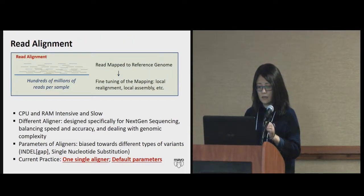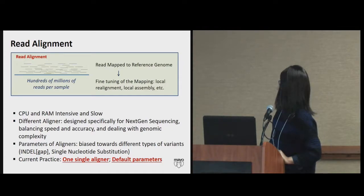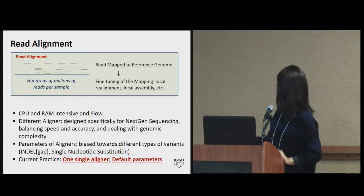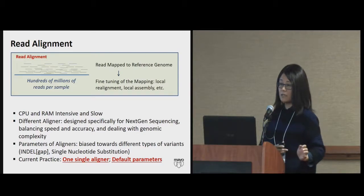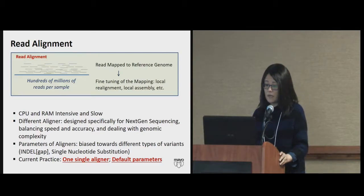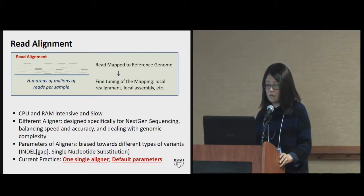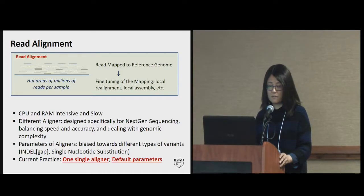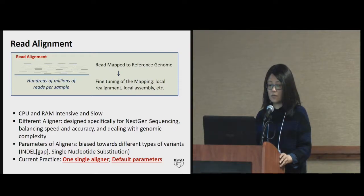Looking at more details of the algorithm used for read alignment: it's really CPU and RAM intensive and slow because of all the manipulation done locally block-by-block along the entire genome. There are many aligners and algorithms available, all specifically designed for next-gen sequencing problems where you have hundreds of millions of reads. You have to balance between speed and accuracy and think about how you deal with genomic complexity — some regions are very difficult to map.